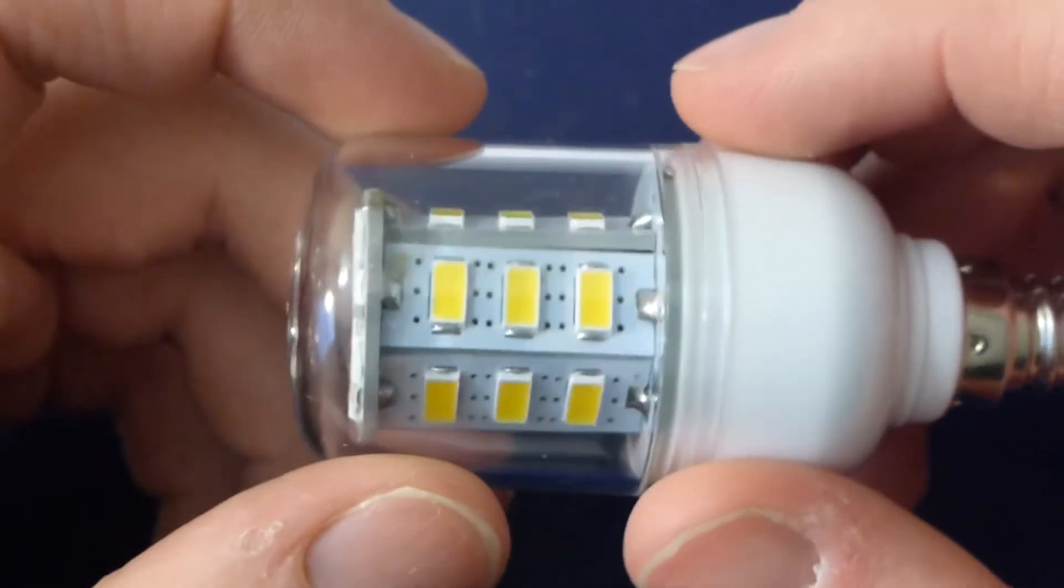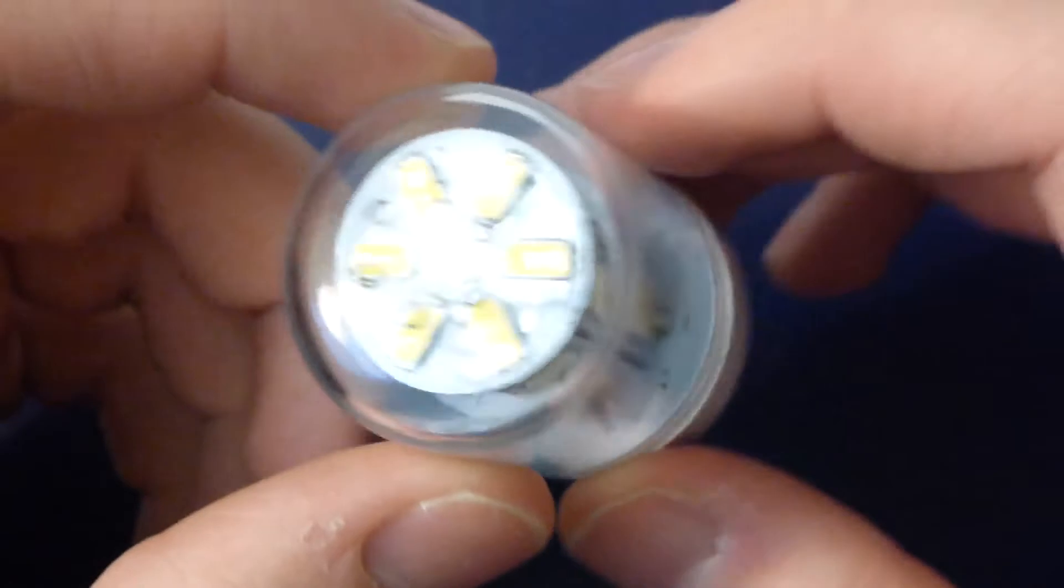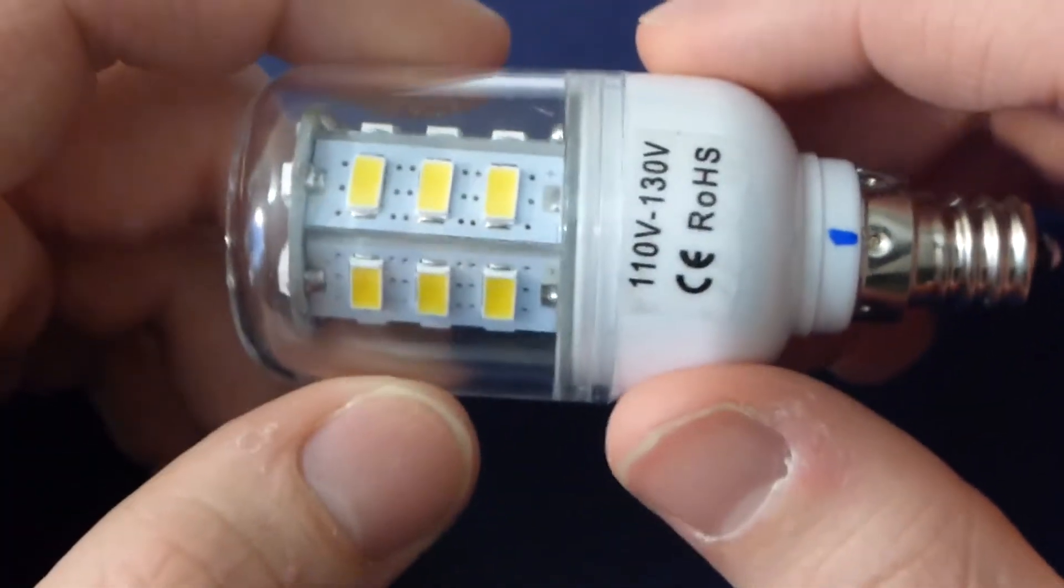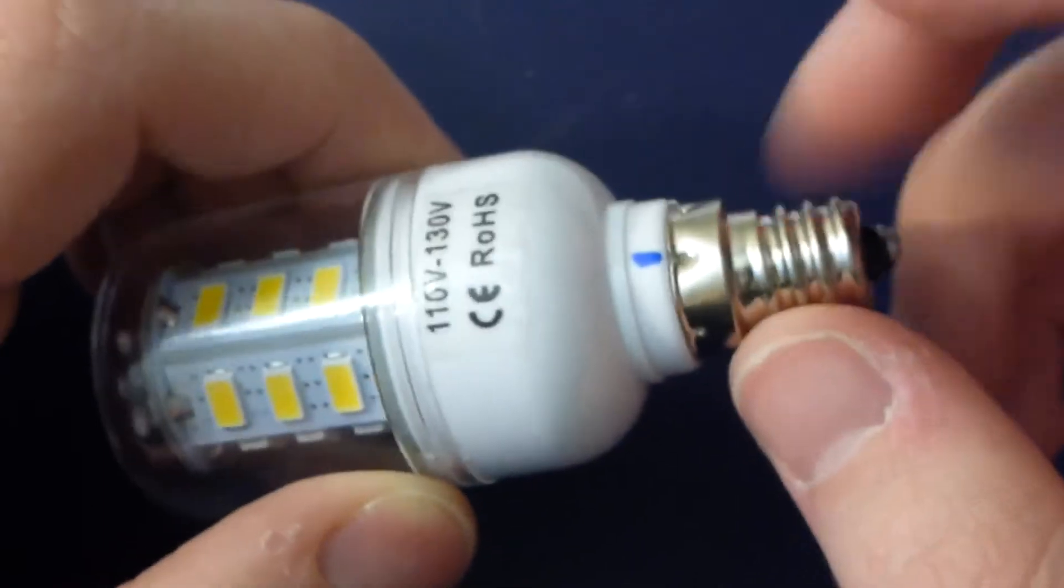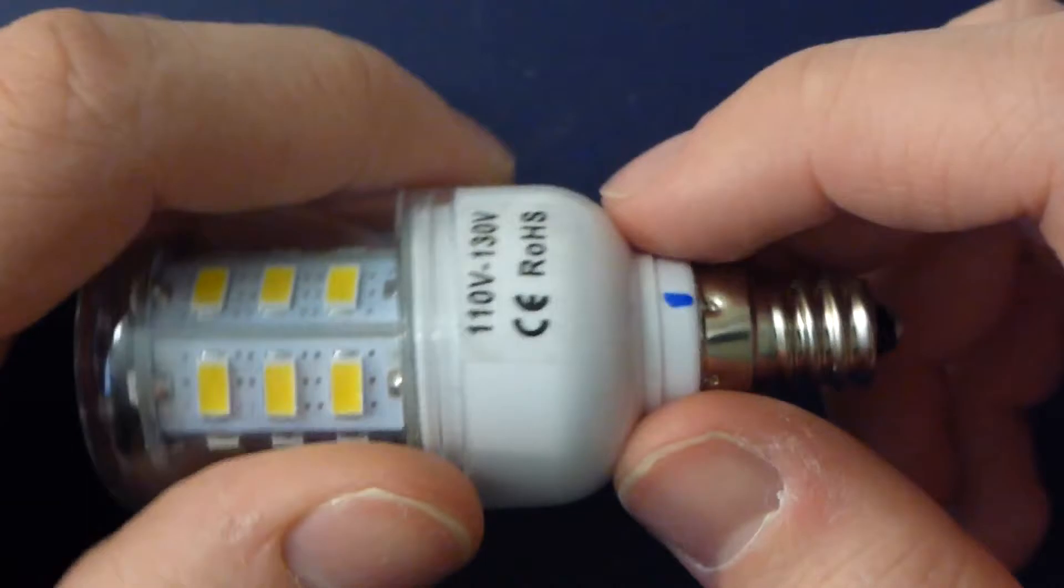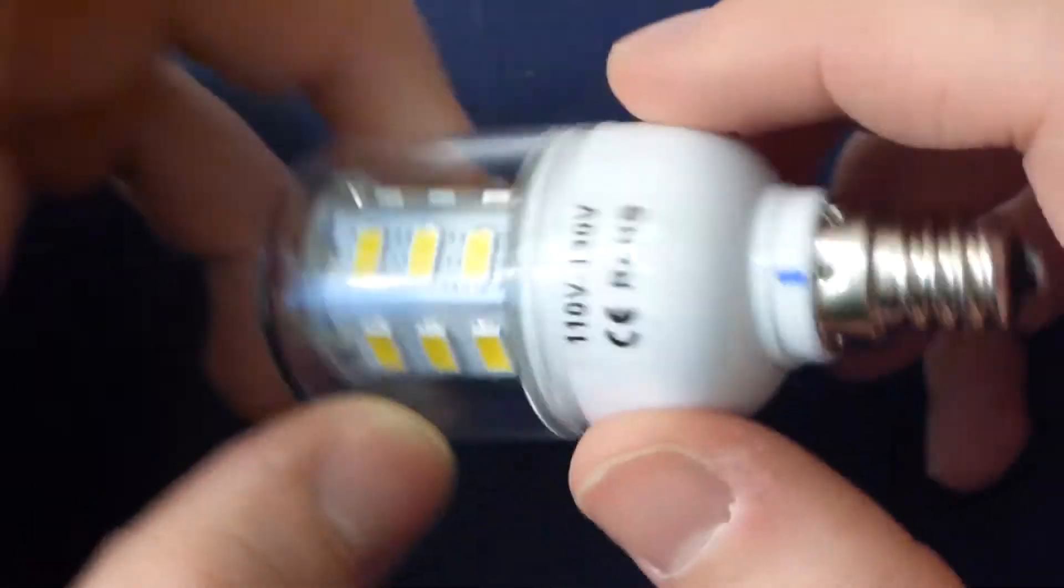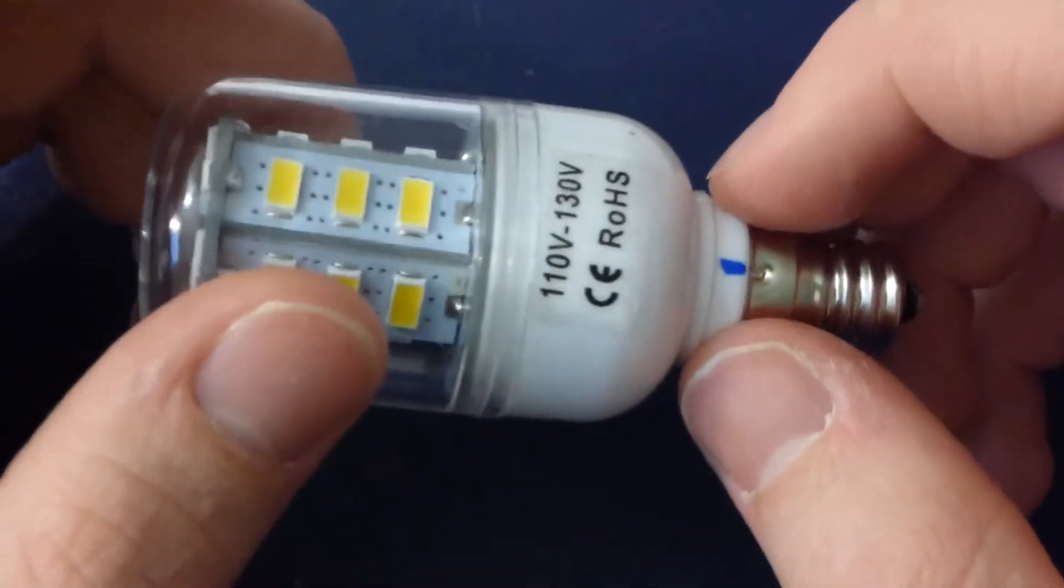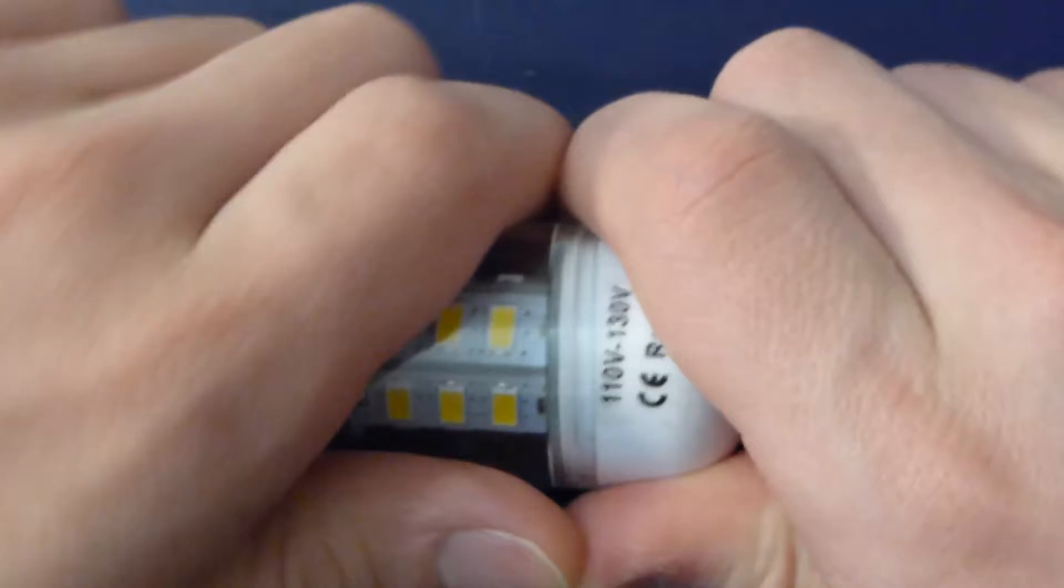This particular bulb has 24 LEDs - there are six strips with three each, plus the six on the top. This one is rated at 5.5 watts. I haven't actually tested the power consumption because I don't have an easy way to plug my meter into any of the sockets. I've looked at the light output compared to the incandescence, and given a nominal 100 lumens per watt or so, I'd say they are not lying - it is probably somewhere around 5.5 watts.